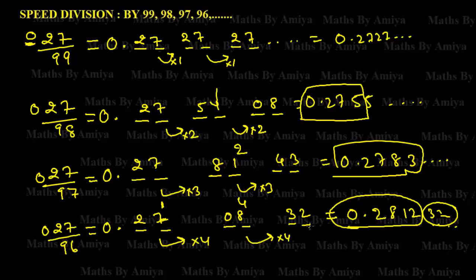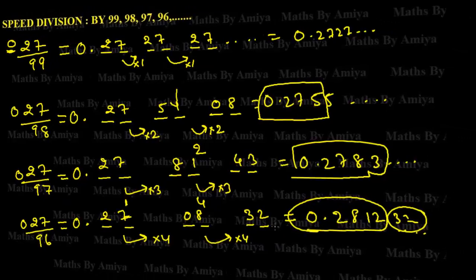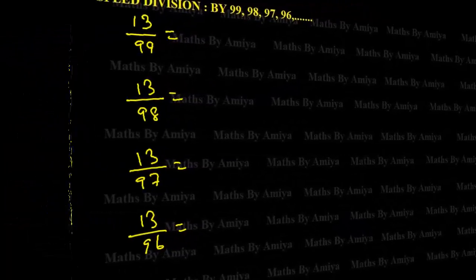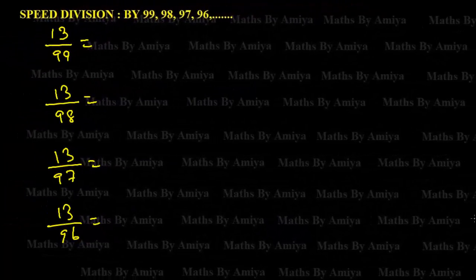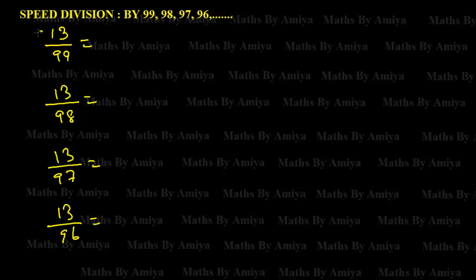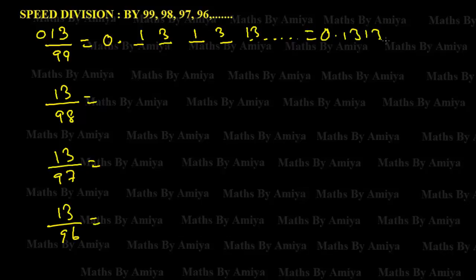For better practice, let's solve four more questions. For 13 divided by 99: we have a double digit, so we look for the third digit — that is 0. The gap between 99 and 100 is 1, so multiply by 1: 13 × 1 = 13, again 13, and so on. The answer is 0.1313... — which is the recurring decimal we already know.